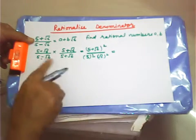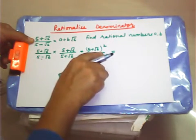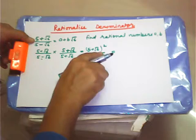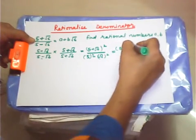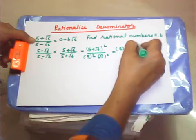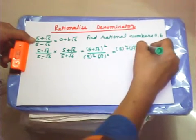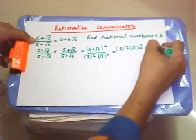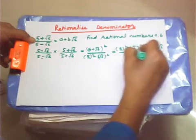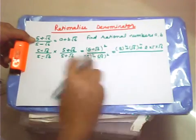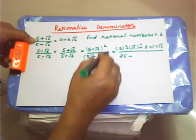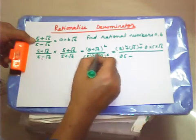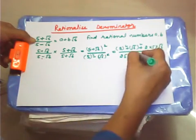We use the identity (A + B)² = A² + B² + 2AB. So the numerator gives us 5 whole square plus root 6 whole square plus 2 times 5 times root 6. In the denominator, 5² = 25, and root 6 squared — the square and root cancel — it becomes 6.